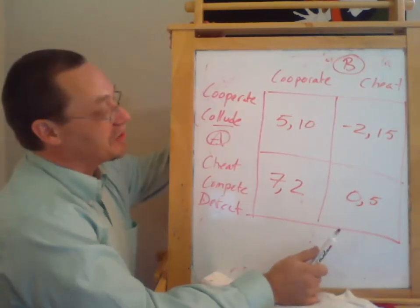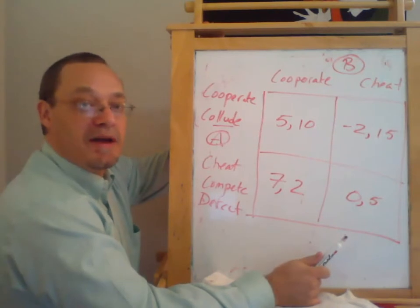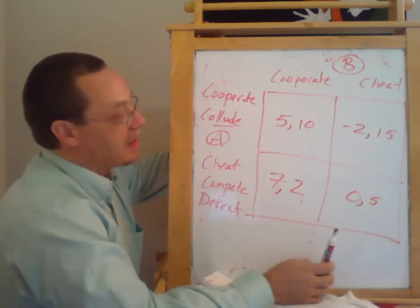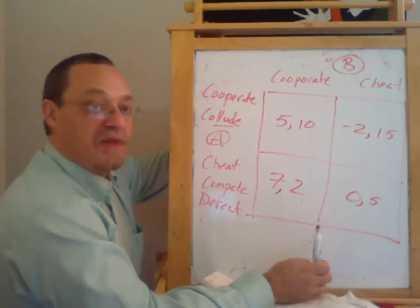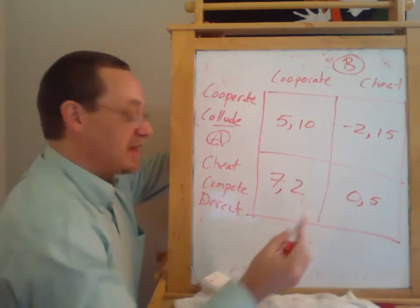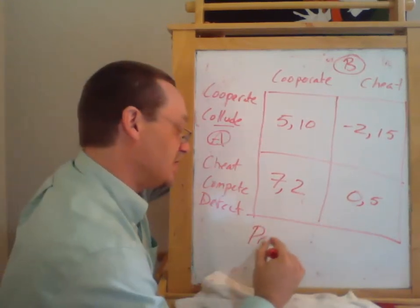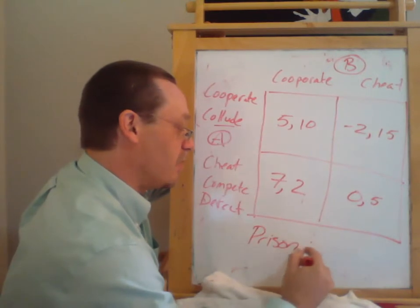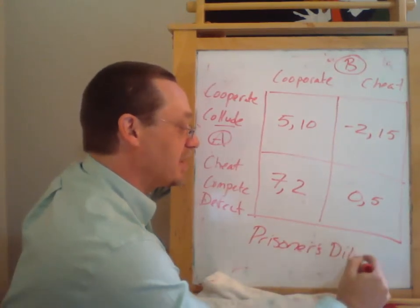So let's look at this game and try to figure out whether or not the firms have a dominant strategy or not. And they do in fact have the dominant strategy. And that's what's going to make this an example of what's called the Prisoner's Dilemma game.